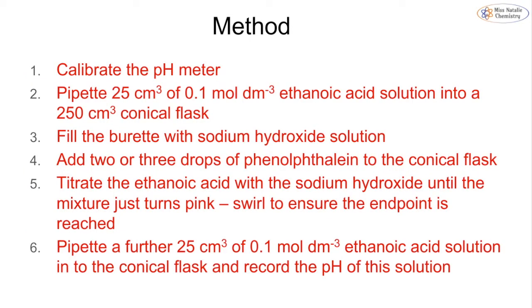The first thing that we have to do is we have to calibrate our pH meter. We then pipette 25 cm³ of our ethanoic acid into our conical flask. We fill the burette with our sodium hydroxide solution and we add a few drops of our indicator onto our conical flask. We titrate the ethanoic acid with the sodium hydroxide until the mixture turns just pink.